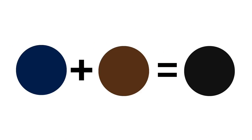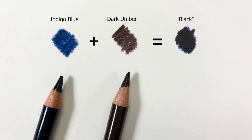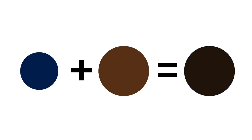Black is most easily mixed by combining a blue with a brown. Darker browns and darker blues clearly work the best. For example, when mixing colored pencils from the Prismacolor line, indigo blue and dark umber create a wonderful black. If you mix a black with a heavier concentration of blue, the result is a cooler black. If you mix a black with a heavier concentration of brown, the result is a warmer black.